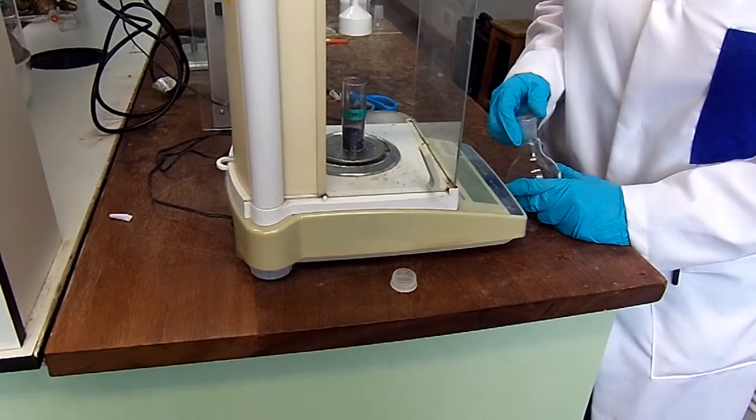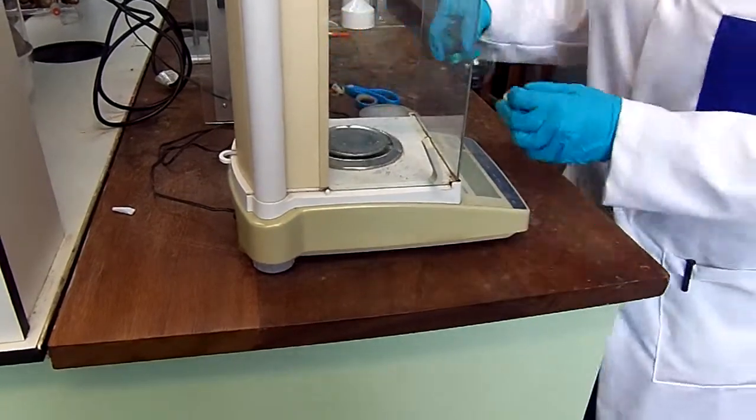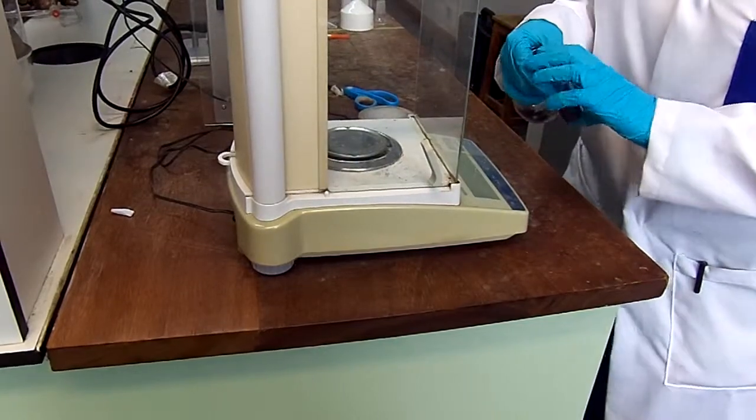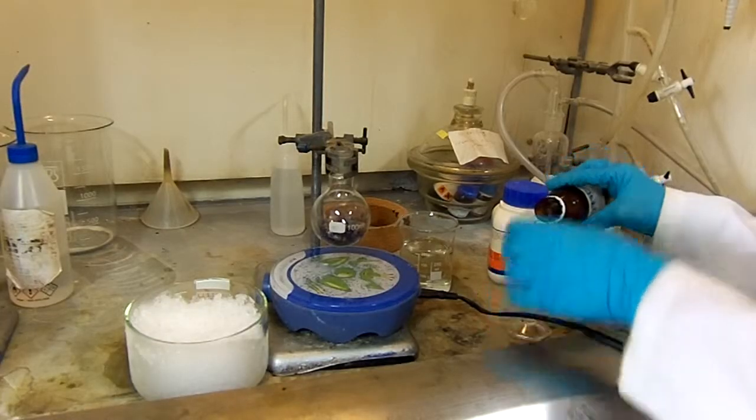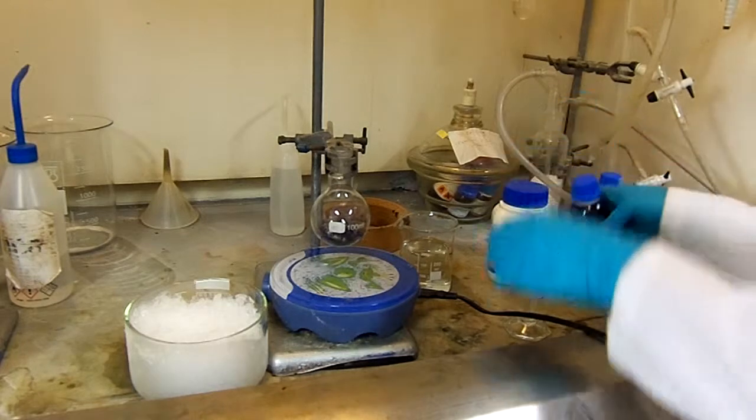Weigh out your TPP. In this reaction it's particularly important that all reagents are weighed out accurately. Dissolve your porphyrin in approximately 10ml of trifluoroacetic acid.